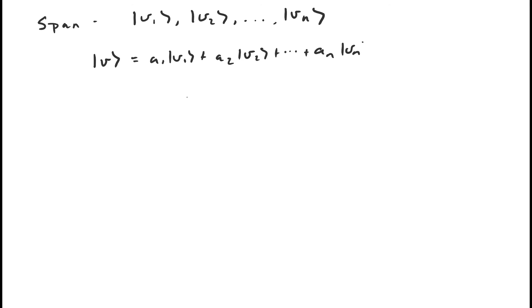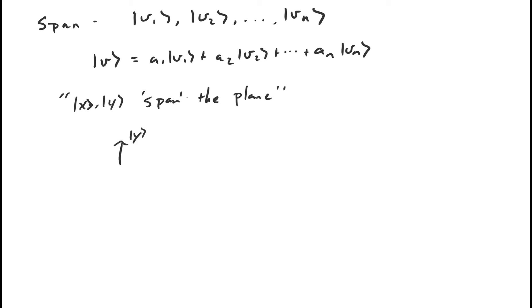You'll sometimes also hear span used as a verb. For example, you may hear the vectors x and y span the plane. This just means that any vector in the vector space — in this case the plane — can be expressed as a linear combination of the given vectors. So any vector in the plane can be expressed as a linear combination of x and y, and we say that x and y span the plane because the span of x and y is the whole plane.